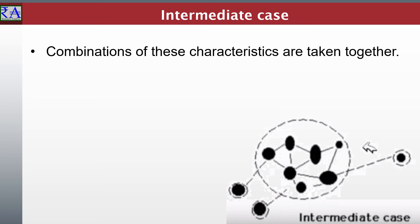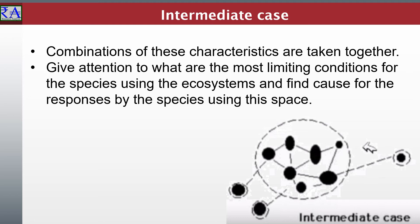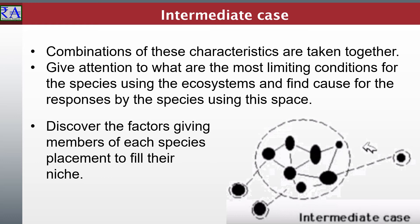Intermediate case metapopulations are a catch-all scenario where combinations of these conditions are all taken together. As a land use manager, look to the factors of the species using the habitat to discover what factors of survival are most limiting. For the ungulates of the Kaibab Plateau in Arizona, it became water to drink. For the Northern Spotted Owl, it is the habitat needed for feeding and rearing their young. A balance of habitat needs combine as species fill their niche.